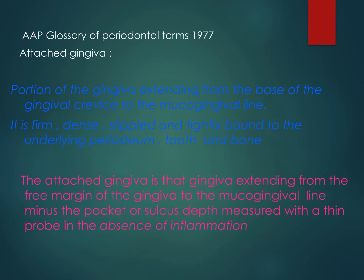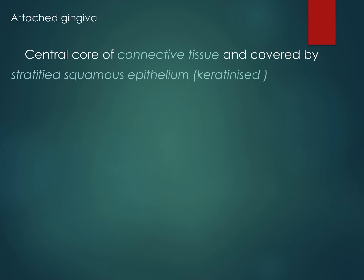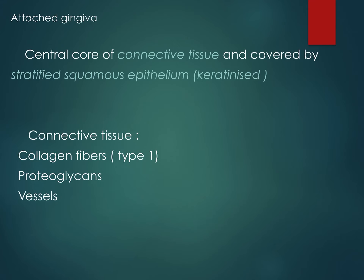The attached gingiva is defined as the gingiva extending from the free margin of the gingiva to the mucogingival line, minus the pocket or sulcular depth measured with a thin probe in the absence of inflammation. These are the various definitions given by AAP and this one is by Walter Hall. If you're able to remember the definition verbatim, please go ahead. But if not, just write it as an introduction, because the statement of definition has to be exact.